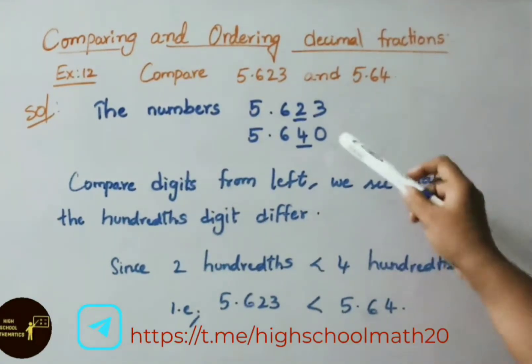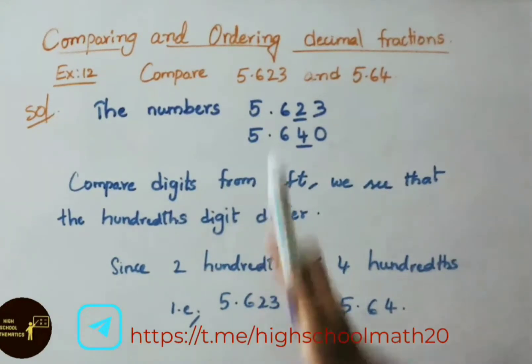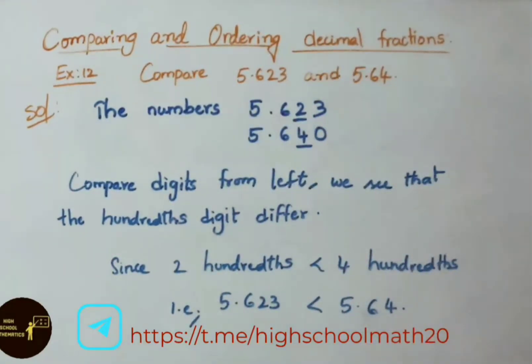Now compare the digits from left. We see that the hundredths digit differ. Since 2 hundredths is less than 4 hundredths, 5.623 is less than 5.64.